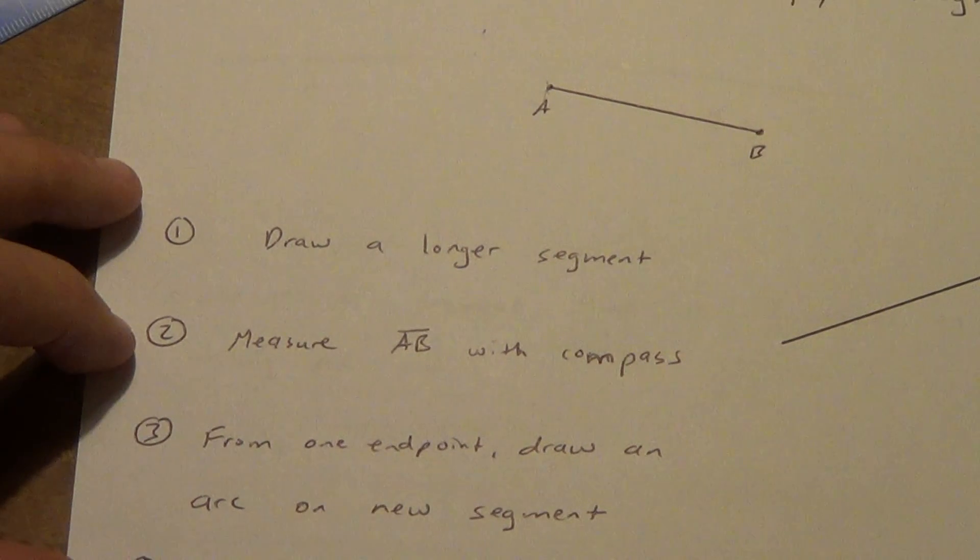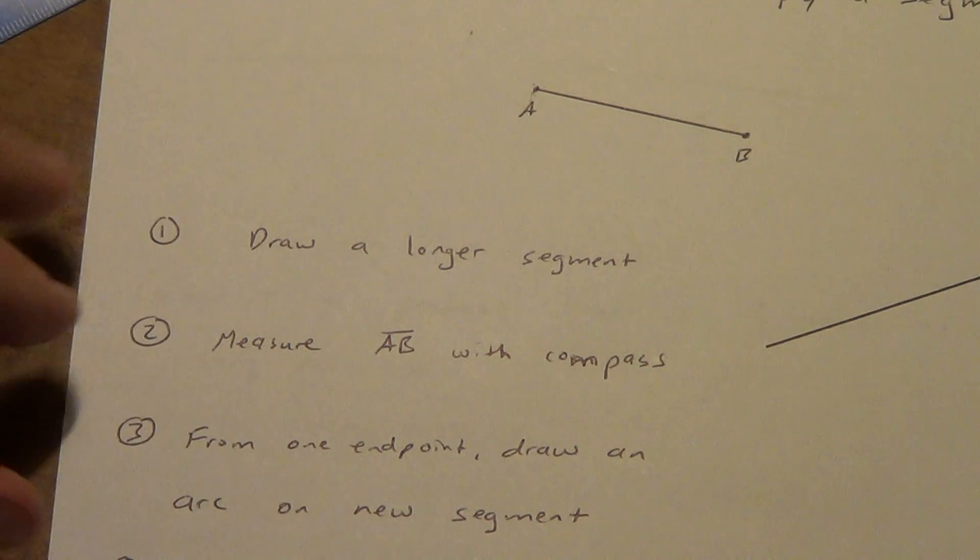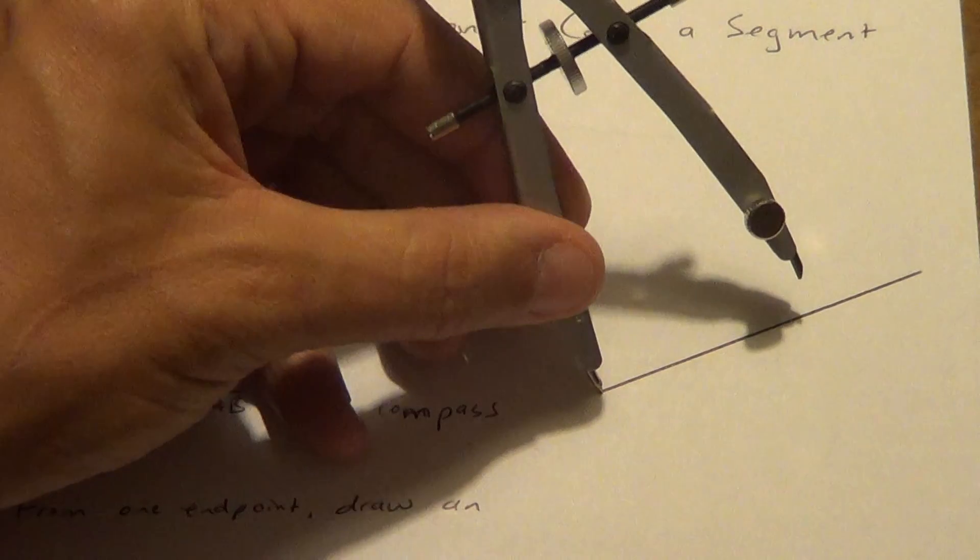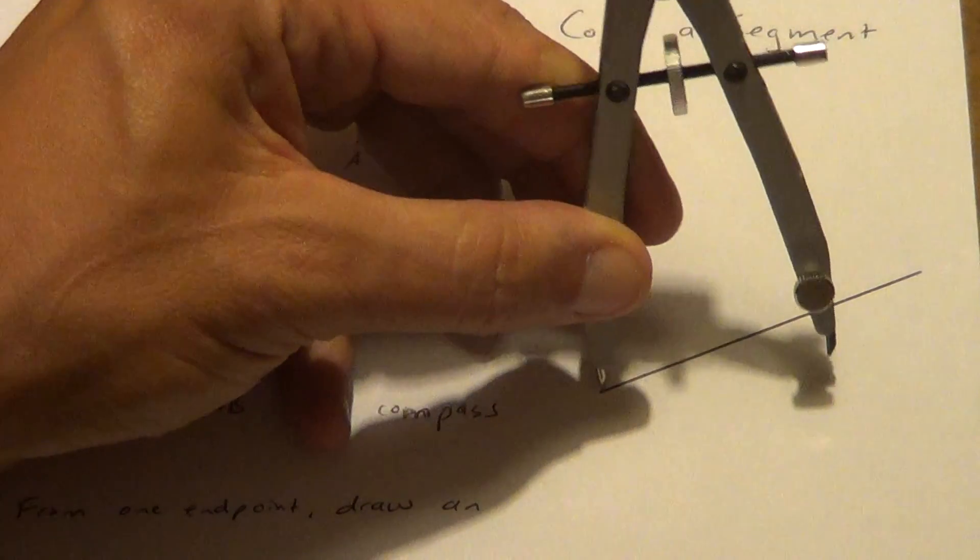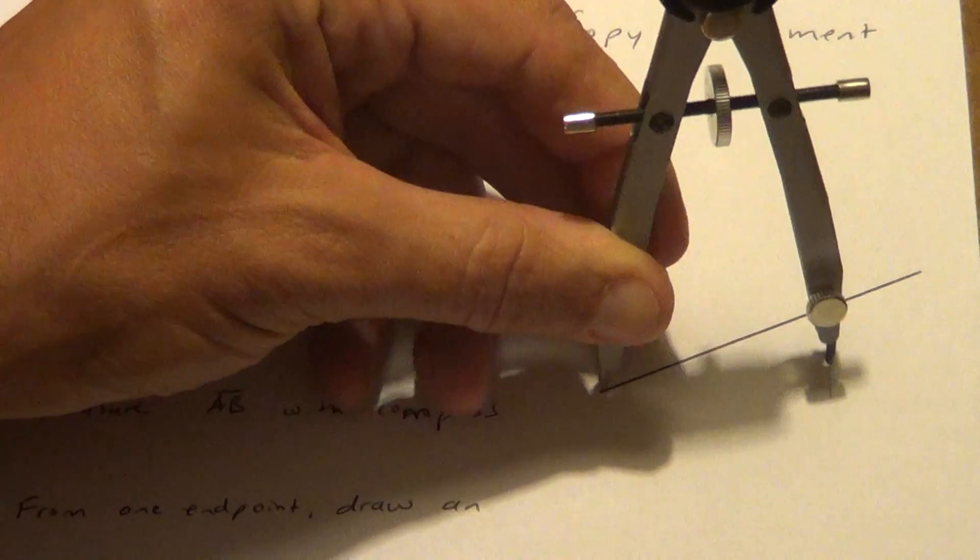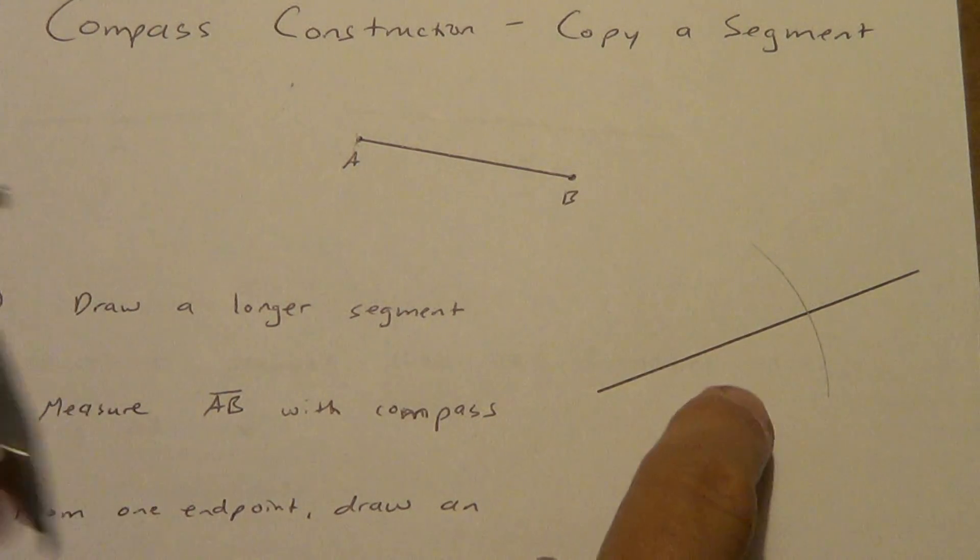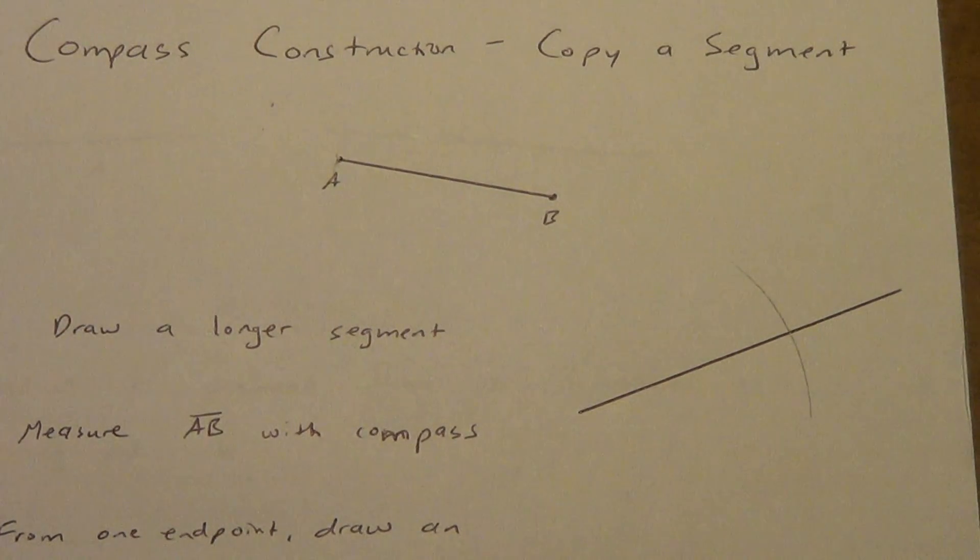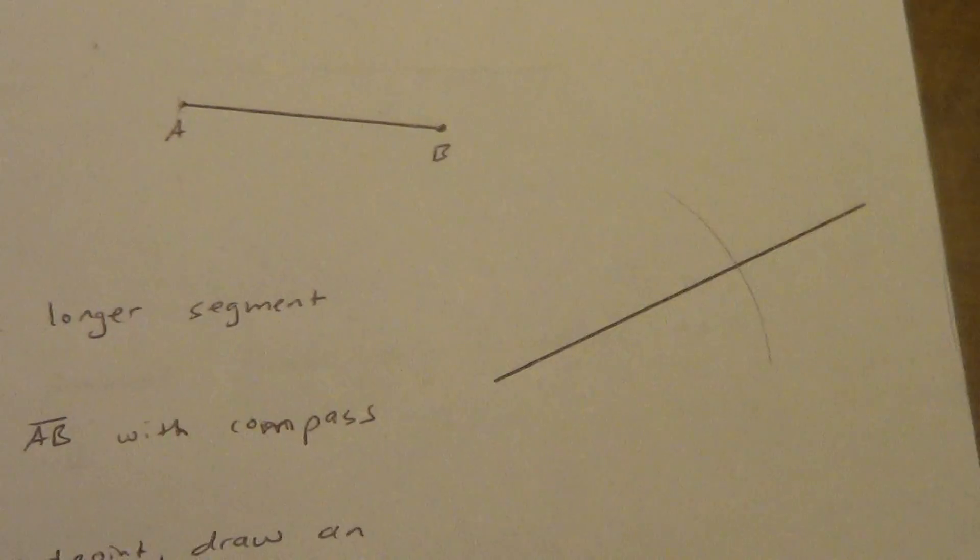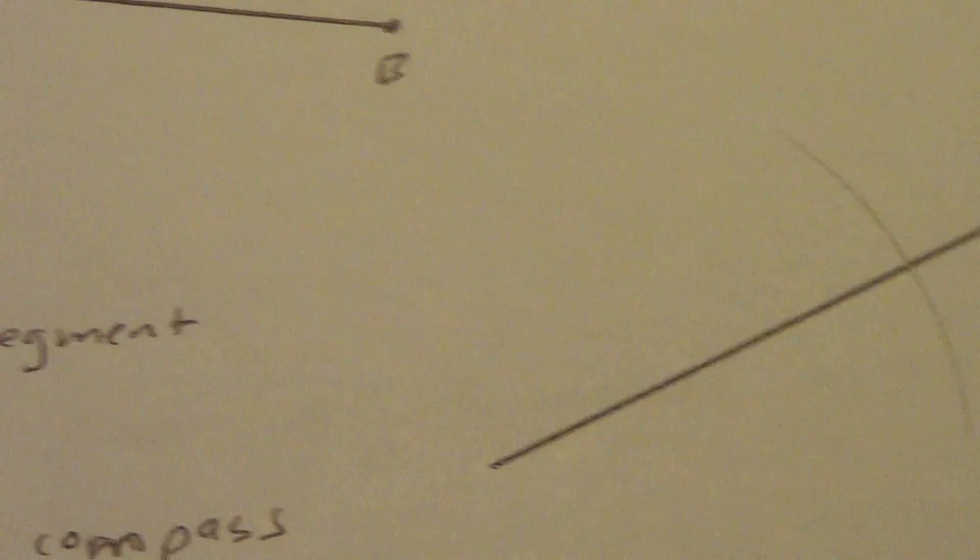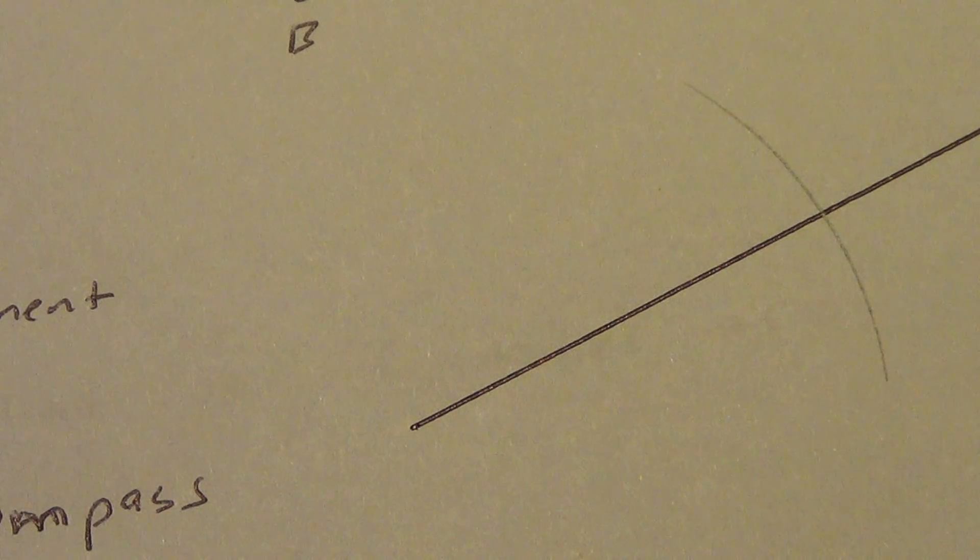Step three. From one end point, I need you to draw an arc on your new segment. It doesn't matter which end point you pick. Remember, we hold our compass with one hand, put some pressure on that compass, and then just drag your compass. Now you can barely see that arc. It doesn't have to be really dark. I'll zoom in a little bit so you can see that it's there. It doesn't have to be very dark, it's in pencil. As long as I can see it, we're good.